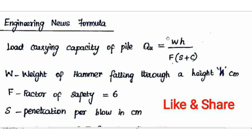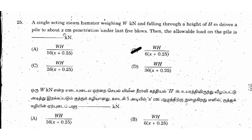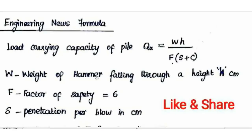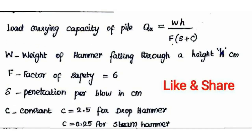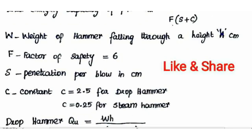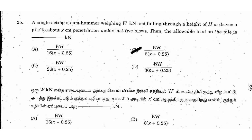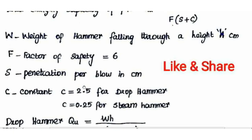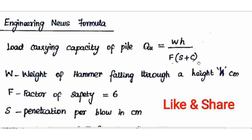In the Engineering News Formula, W is the weight of the hammer, H is the height of fall, S is the penetration per blow in centimeters, and C is a constant. The C value is 2.5 for a drop hammer and 0.25 for a steam hammer. For a single-acting steam hammer, Q equals WH divided by 6 times the quantity S plus 0.25. For a drop hammer, Q equals WH divided by 6 times the quantity S plus 2.5.